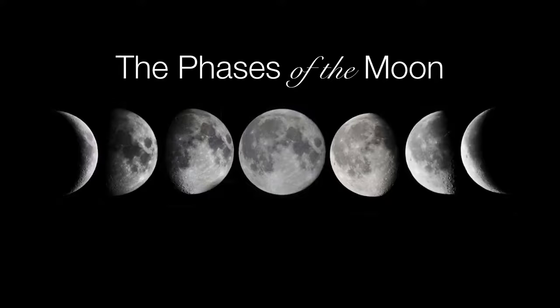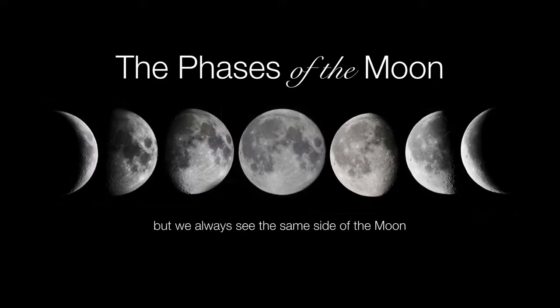So these are the familiar faces of the moon. Now before we describe the phases of the moon, let's just clarify one rather important point about the moon: we always see the same side of the moon. It doesn't matter what phase it's in. If you look at the features on the moon's surface, we're always seeing the same near side of the moon.